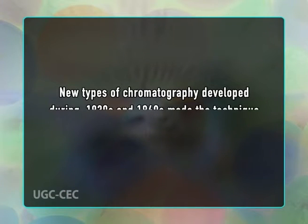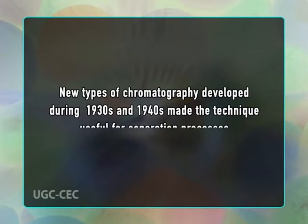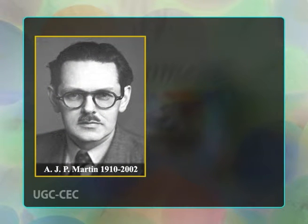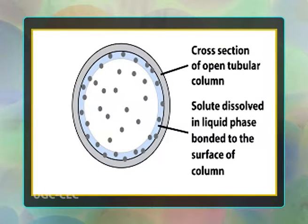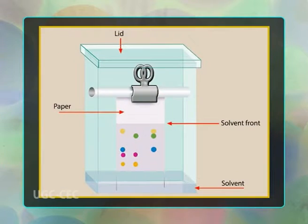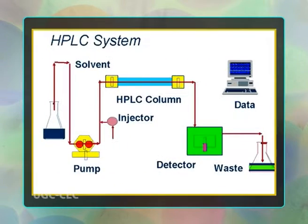New types of chromatography developed during the 1930s and 1940s made the technique useful for many separation processes. Chromatography techniques developed substantially as a result of the work of Archer John Porter Martin and Richard Lawrence Millington Synge during the 1940s and 1950s. They established the principles and basic techniques of partition chromatography, and their work encouraged the rapid development of paper chromatography, gas chromatography, and what would become known as high-performance liquid chromatography. Since then, the technology has advanced rapidly.